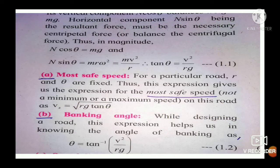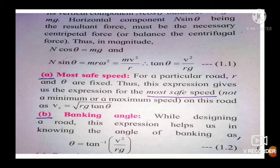Welcome students. In the last video we studied banking of road. Banking of road means the surface of road is kept inclined with the horizontal at the curve, so that the outer edge of the road is at a higher level than the inner edge. The angle of banking is denoted by theta.